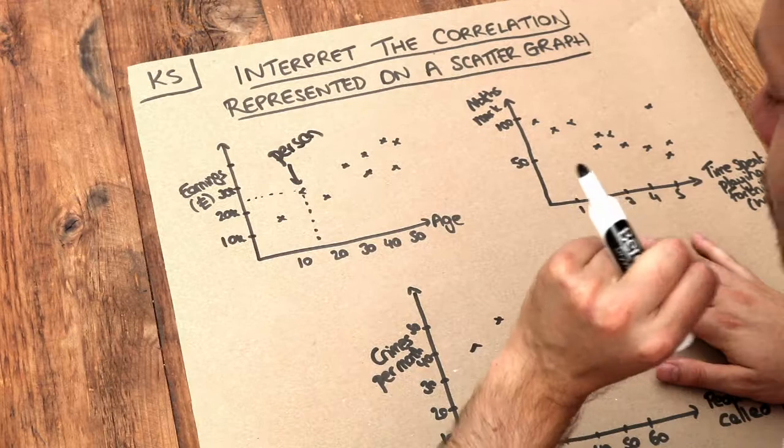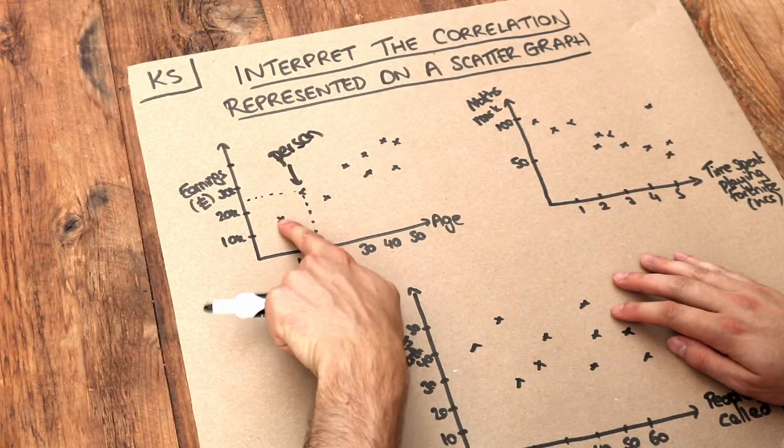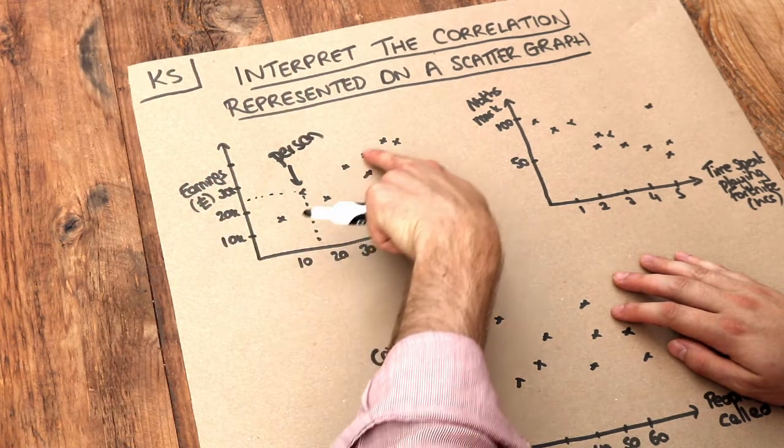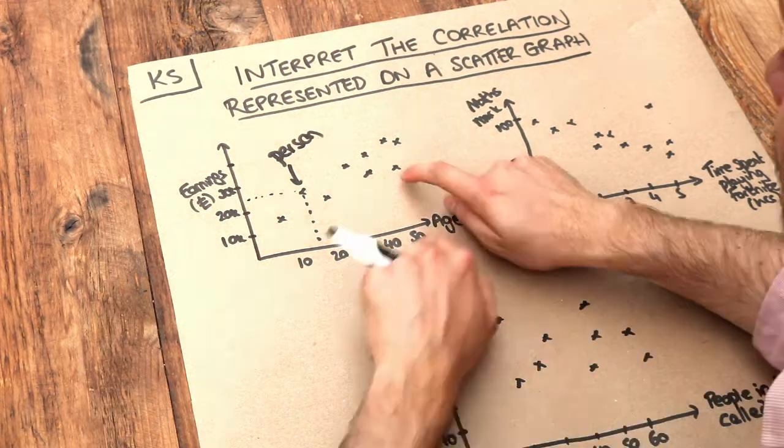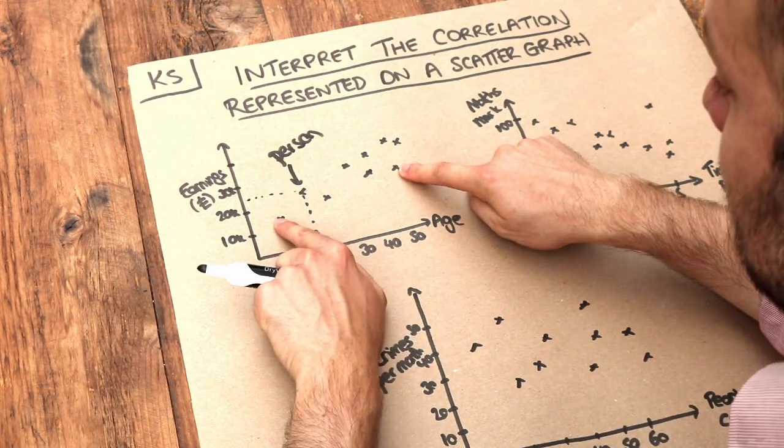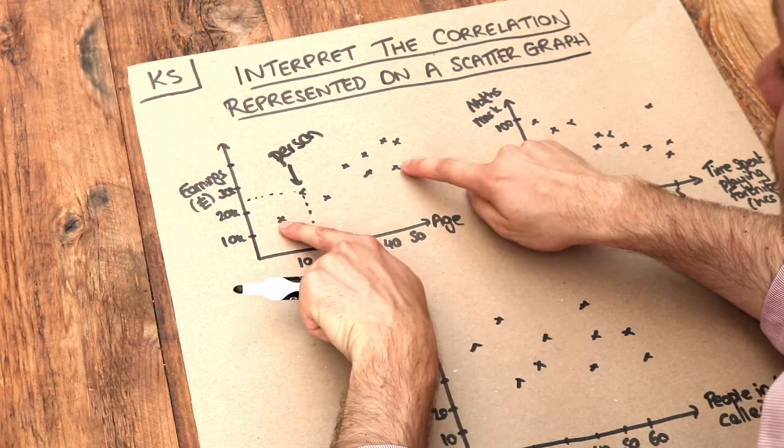Now can you see there's a relationship between age and earnings? For most people, as they get older, the earnings tend to increase. Take these two people for example: this person is older than this person, so he has more years and he earns more than this person.